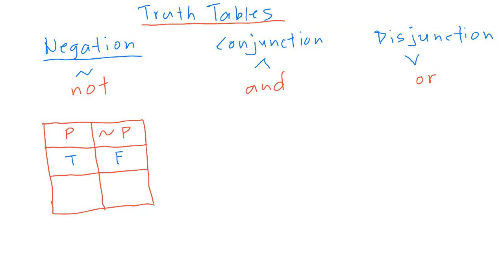The other state for the first column would be false. We take the opposite of that, same as the first move, so this becomes true because it's not p. And that's the negation truth table.